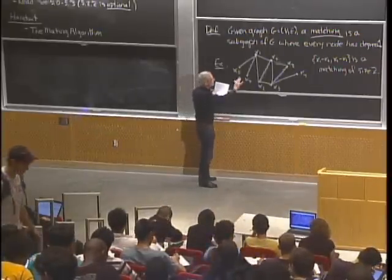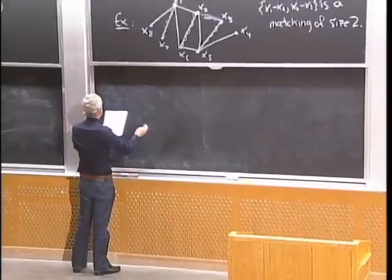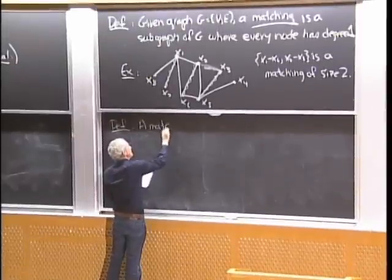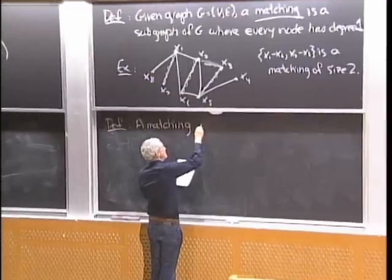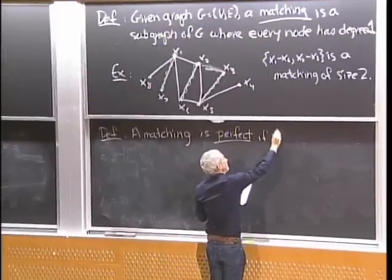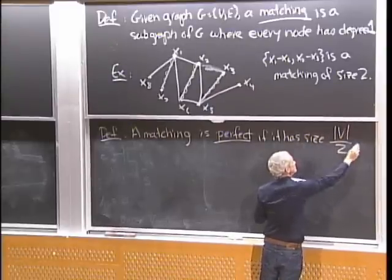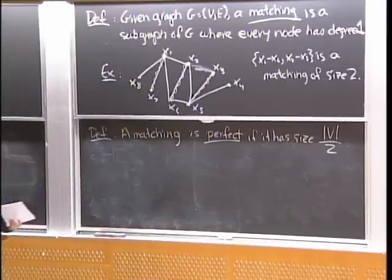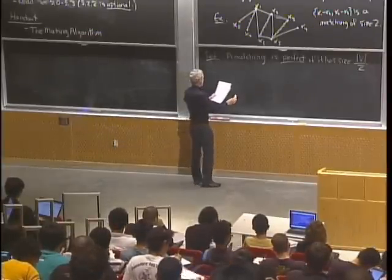When you get every node in a matching, it's called a perfect matching. In this case it doesn't exist, but sometimes it does. A matching is perfect if it has size equal to half the number of nodes — in other words, if the number of edges equals v over 2, then every node is in the matching. That one doesn't have a perfect matching.